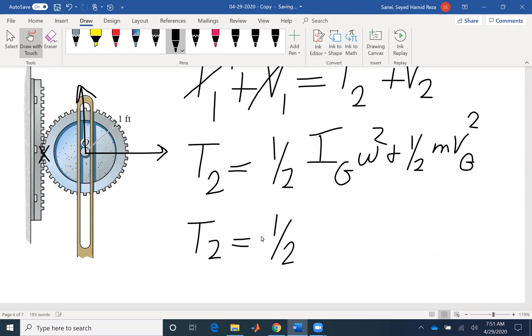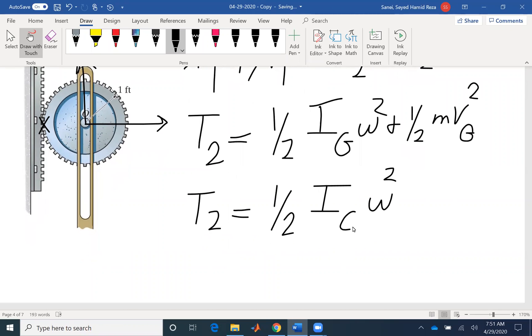So that would be half I, I'm going to call that point C, omega squared. And you would see, according to our parallel axis theorem, these two equations would become the same. So if we replace V with R omega, you would get Ig plus M R squared omega squared.